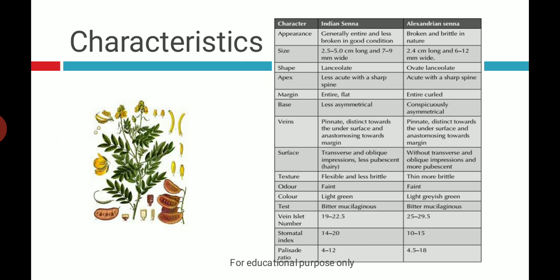The apex is acute in both, but it is more sharply acute in Alexandrian Senna and less sharp in Indian Senna. The margin is entire in both cases. The leaf is flat in Indian Senna, while in Alexandrian Senna it is curled. The base is less asymmetrical in both, and venation is pinnate in both cases.